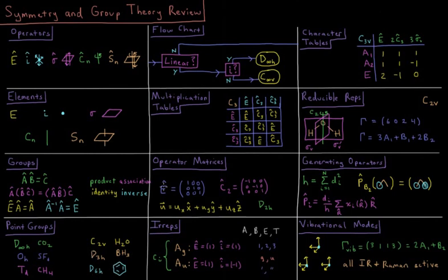Determining the point group for an individual molecule can be done by following the flow chart in that particular video where you look at the molecule and ask questions like, is it linear? If yes, go over here. If no, go over there. Does it have an inversion center eventually ending up at a specific kind of point group label such as D infinity H?